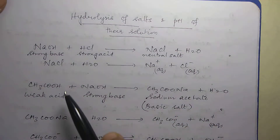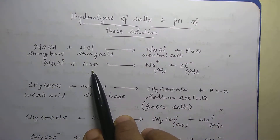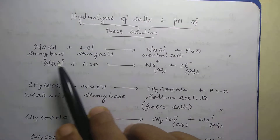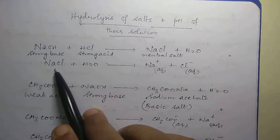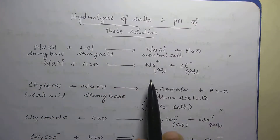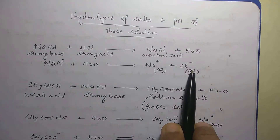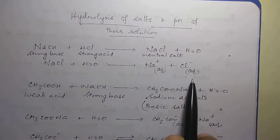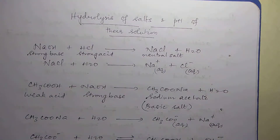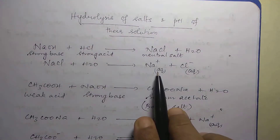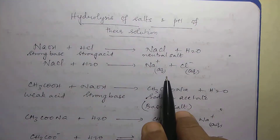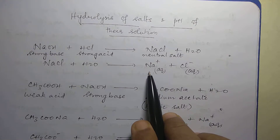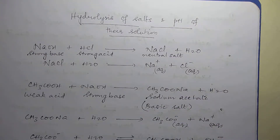Now if you put NaCl in water, what will happen? Will you get NaOH and HCl back? Not at all. NaCl will ionize to give you Na⁺ ion and Cl⁻ ion, and both ions will be surrounded by water. When water molecules are getting associated around a particular ion, it is called hydration.